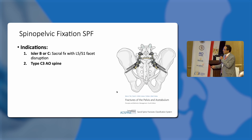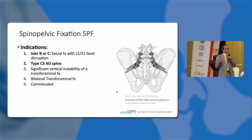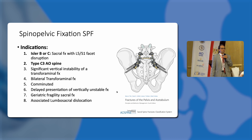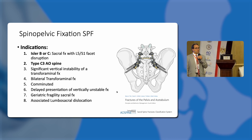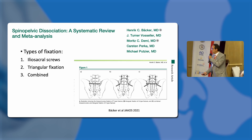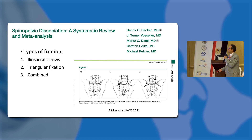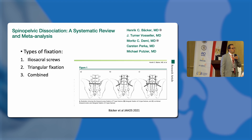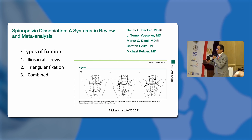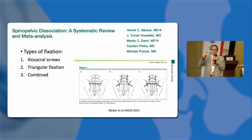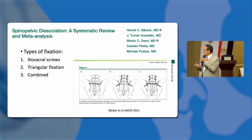We need to fix anterior and perform spinopelvic fixation. Spinopelvic fixation is indicated in Isler B or C, type C3, significant vertical instability, bilateral transforaminal or comminuted transforaminal fractures, delayed presentation, geriatric fragility fractures, and associated lumbosacral dislocation. A 2021 systematic review in the Journal of the American Academy describes three types of fixation: ileosacral screws alone, triangular fixation, or combined spinopelvic fixation. For bilateral cases with complete spine-pelvis separation, ileosacral screws alone will not be enough — it must always be a spinopelvic fixation.